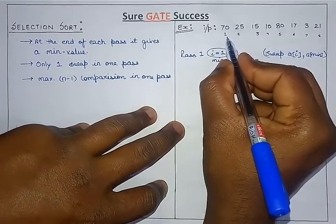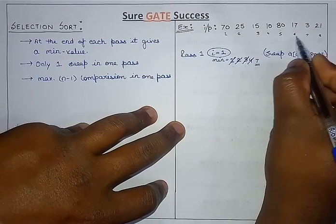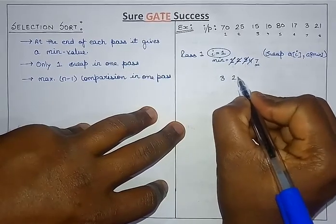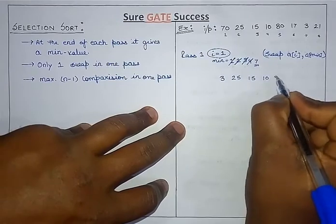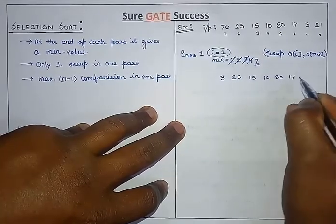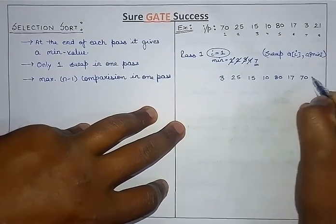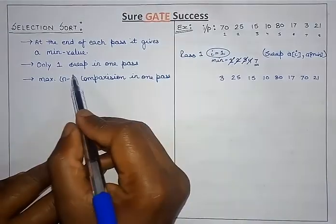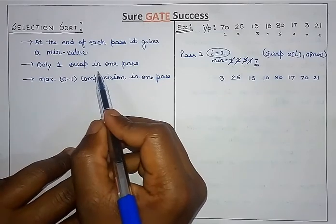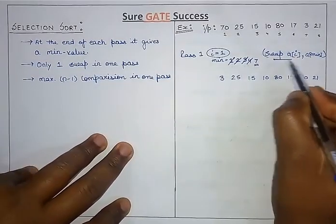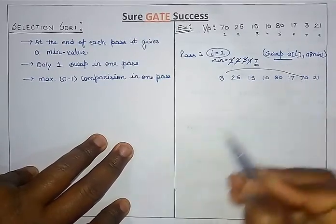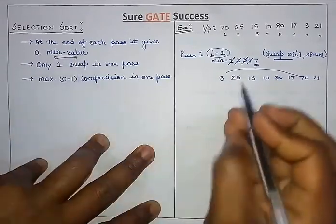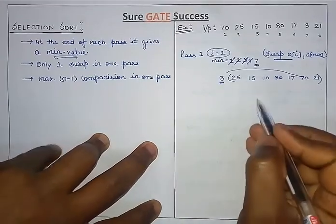We have to swap the i-th value of the array with the minimum value of the array. So we swap the first element with the 7th element. After the swap, the array becomes: 3, 25, 15, 10, 80, 17, 70, 21 — with 3 placed first. You can see there is only one swap in a single pass, and it gives us the minimum value, which is 3.